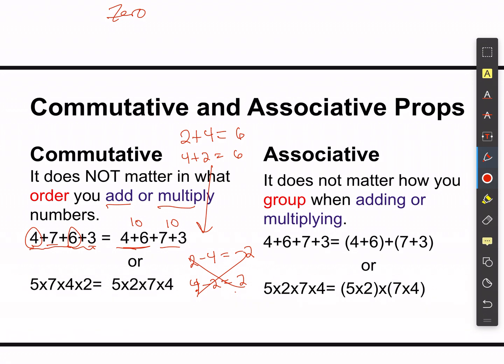Or if you're multiplying, maybe you want to get a 10 out — group the 5 and the 2 together to get 10, then multiply 7 and 4 together to get 28, and multiply those two together. That's the commutative property — I can switch the order.